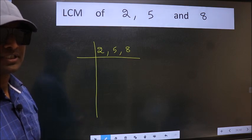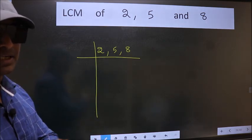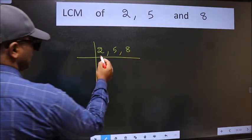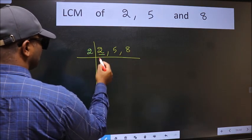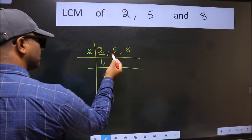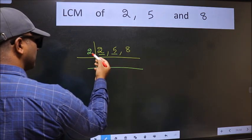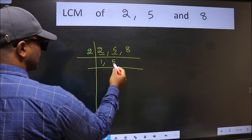Now we should focus on the first number which is 2 here. 2 is a prime number so 2 wants 2. The other number 5 not divisible by 2 so you write it down as it is.